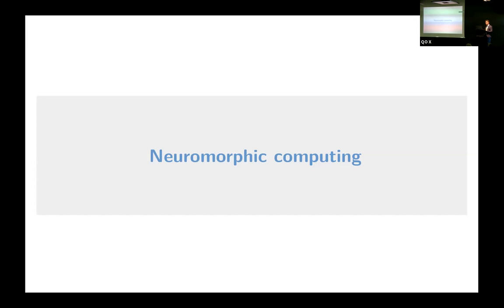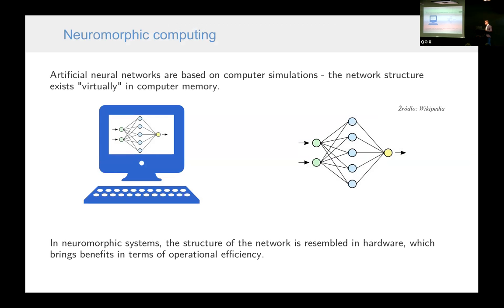What is the answer? What can we do with this? If we want to build efficient neural networks, one of the ways is the so-called neuromorphic computing approach. In this approach, we built neural networks in hardware. Nowadays, neural networks, artificial neural networks are based on computer simulations. The network only exists in memory of the computer. However, if we were able to somehow resemble this network in hardware, this could bring a lot of benefits in terms of efficiency.